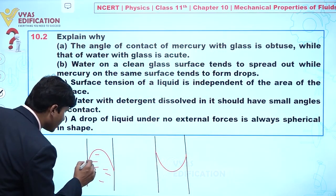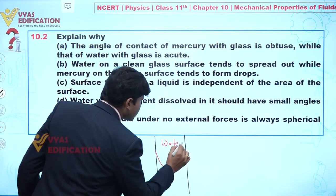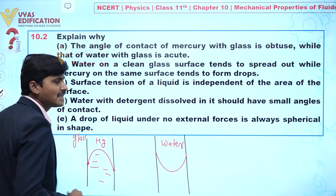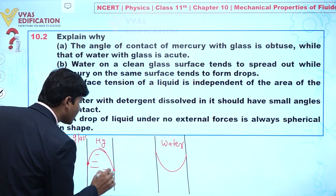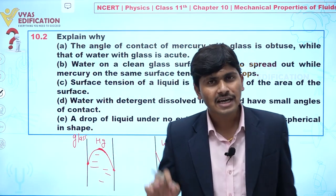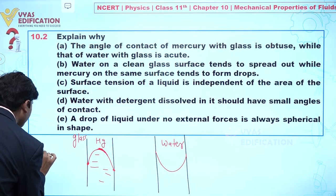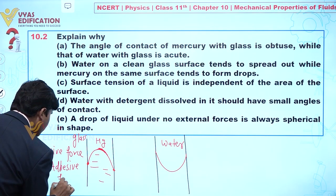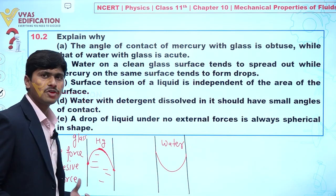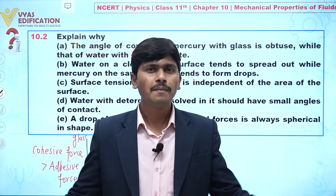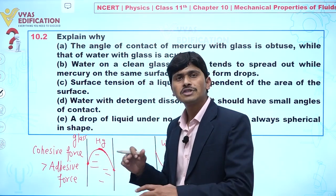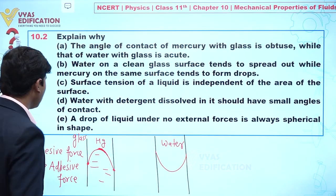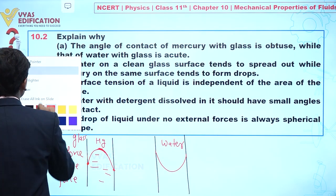Between mercury and glass, the forces acting are adhesive forces, while between mercury molecules we have cohesive forces. In the mercury-glass combination, cohesive force is greater compared to adhesive force. When cohesive force is more, all the mercury molecules want to come toward the middle, because the force between mercury molecules is stronger than the force between mercury and glass. That's why we find an obtuse angle of contact.